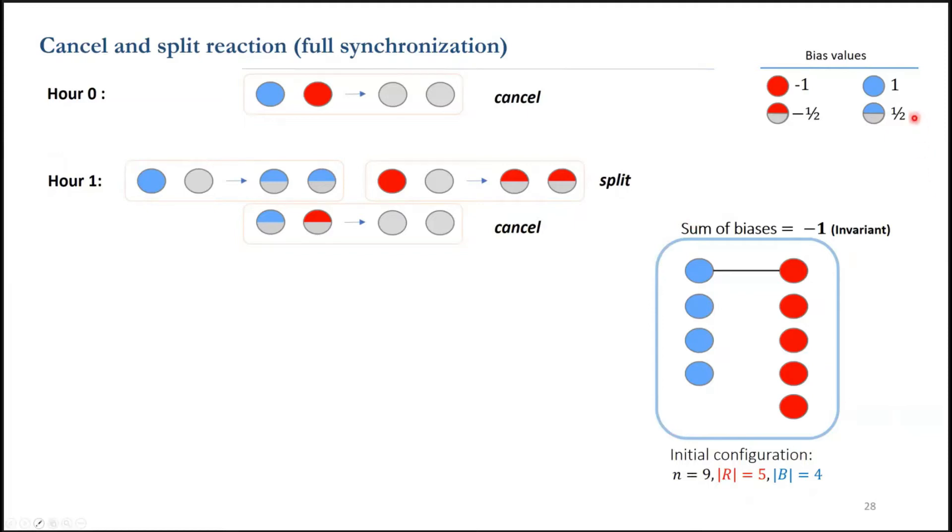We want to compute the majority. We also use integer values to show how strong is one's opinion, and we call them bias. So the state of the agents will be these rational numbers, negative 1, negative 1 half, negative 1 fourth, positive 1, positive 1 half, 1 fourth, and so on, plus 0, which shows the bias a neutral agent.